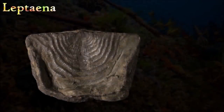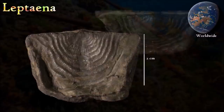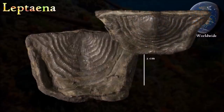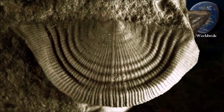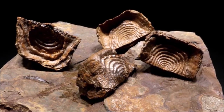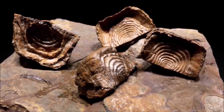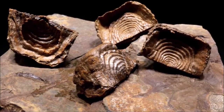Leptaena was a genus of brachiopods that had an outward-curving pedicle valve, or shell, with an inward-curving brachial valve just inside it. The hinge line was straight and the beaks of both shells projected above it. The pedicle opening, where the fleshy stalk attaching the animal to a surface protruded, was located just below the pedicle valve beak. The shell's surface had strong concentric ribs crossed with fine radial ribs; toward the front edge of the shell was a sharp bend in both valves.